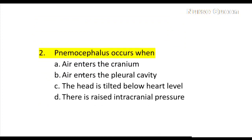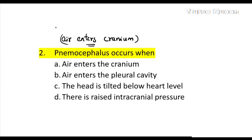Next question: pneumocephalus occurs when — air enters the cranium; air enters the pleural cavity; the head is tilted below heart level; or there is raised intracranial pressure. The correct answer is pneumocephalus occurs when air enters the cranium.